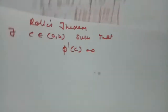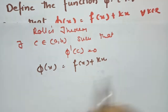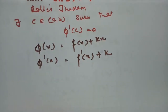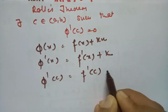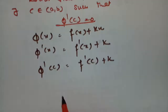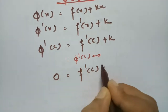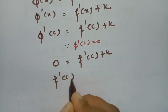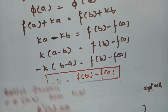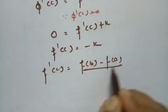Now, what is φ(x)? φ(x) = f(x) + kx. Taking the derivative: φ'(x) = f'(x) + k, since the derivative of x is 1. So φ'(c) = f'(c) + k. Since Rolle's theorem gives φ'(c) = 0, substituting: f'(c) + k = 0, so f'(c) = −k. We established earlier that −k = [f(b) − f(a)] / (b − a). Substituting this value, f'(c) = [f(b) − f(a)] / (b − a).